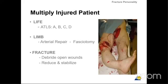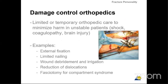For the multiply injured patient: life first with ATLS, then the limb — vascular repair, fasciotomy if there is a risk of compartment syndrome — and then treat the fracture: debride open wounds, reduce and stabilize. Damage control orthopedics is limited or temporary orthopedic care to minimize harm in unstable patients — such as shock, coagulopathy, or brain injury. This includes external fixation, limited nailing, wound debridement and irrigation, reduction of dislocations, and fasciotomy for compartment syndrome.